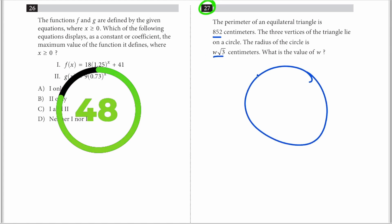Let's draw this out. This is going to be a triangle right here. This is going to be the center of the circle with the radius of w√3. The side is 852 divided by 3, which is 284.